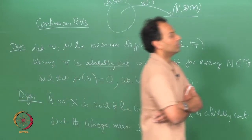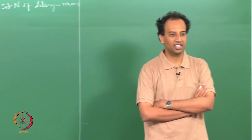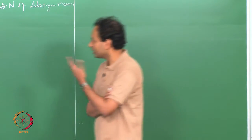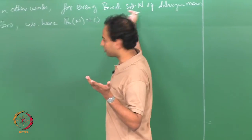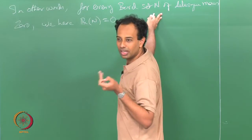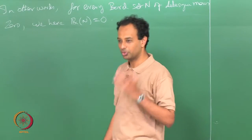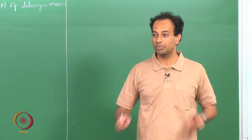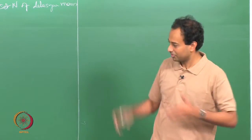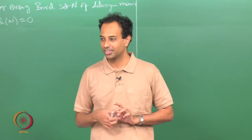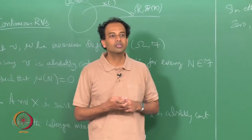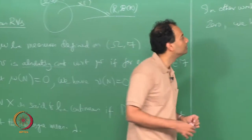It is a popular misunderstanding that a random variable is continuous if all singletons have probability 0 — that is not correct. For every Lebesgue measure 0 set you need the probability measure to equal 0. Even for singular random variables it is true that singletons have probability 0, so that condition alone does not define continuity.